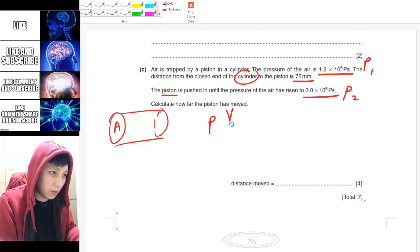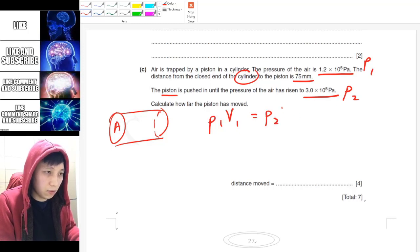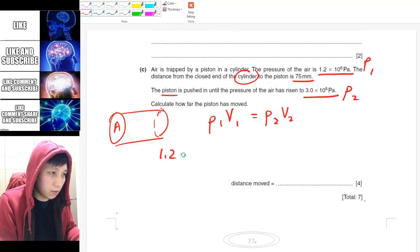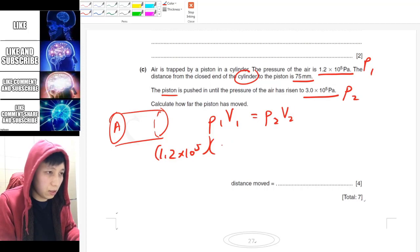So what you can say about it is you can still state the equation P₁V₁ equals P₂V₂. And then for P₁ you can substitute, and for V₁ what you can do is you can say A, which is the area, times 75...